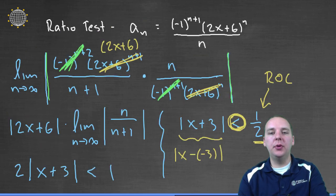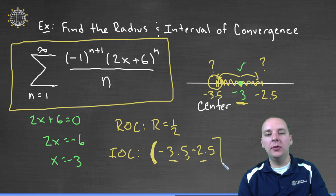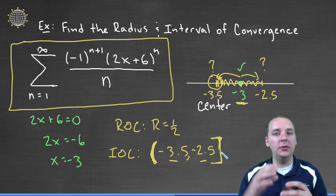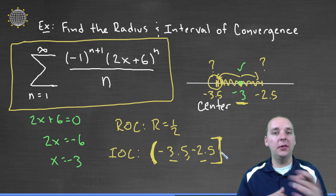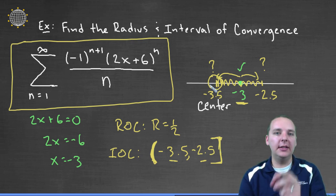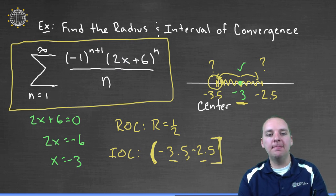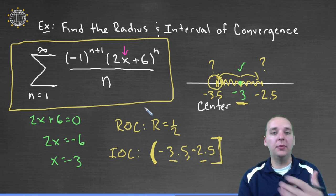So at negative 2.5, we would have a closed bracket. And you can never tell. This problem, it was open, closed. If you try another problem, it will be closed, open. You really can never tell. You actually have to literally test the endpoints by plugging them in for this x in your original series and do it like a regular old problem from scratch.